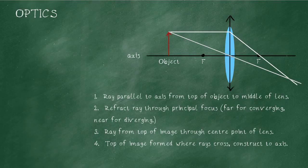Step four is to draw the image arrow. Now the image arrow is from the axis to wherever the rays cross, and we label that arrow image. Often you'll see that arrow is drawn using dotted lines.